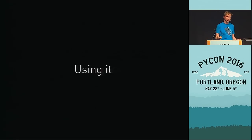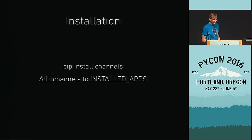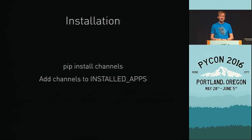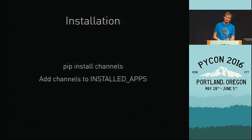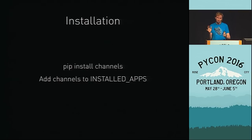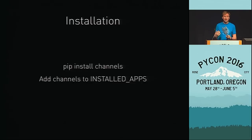Let's look at some code. Installing channels is very easy. Even though I've entirely changed what Django does, it is two things: you install channels and add it to your installed apps. There is a full installation document with caveats, but it just drops in, replaces run server and a lot of other stuff. Once you've done that, you can just start writing consumers.